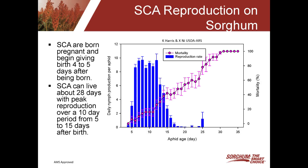What makes the sugarcane aphid such an issue in sorghum is its reproductive capability. The sugarcane aphid is born pregnant and will begin to give birth about four to five days later. Once it starts producing young, it can produce as many as eight to ten aphids in a single day over about a 10-day period. Once you get past that 10 to 12-day period, it begins to taper off. Over the lifespan of that aphid — approximately 30 days — you'll average about three to four aphids per day. That is why the sugarcane aphid can build up so quickly in a field — it has a tremendous ability to reproduce.